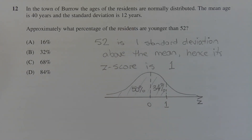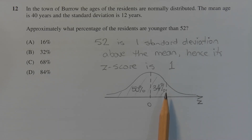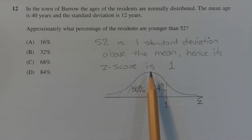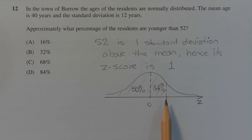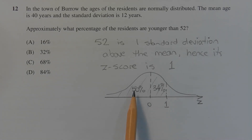To find what percentage of residents are younger than 52, we apply the empirical rule on the standard normal distribution and find the area under the curve that is less than a Z-score of 1. The area less than Z equals 0 is 50%, and the area from Z equals 0 to Z equals 1 using the empirical rule is approximately 34%. So 50% plus 34% is 84%. Therefore approximately 84% of residents are younger than 52.